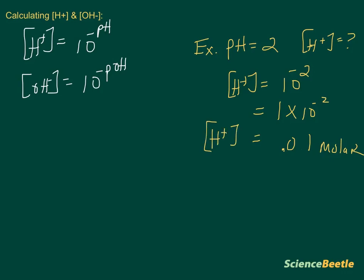And here it's going to be molar. So this is what this really means. When you see a pH of 2, it means that you have a concentration of 1 times 10 to the negative 2 or 0.01 molar.